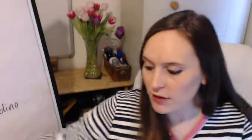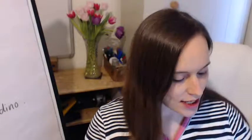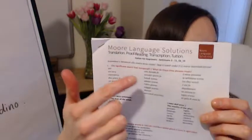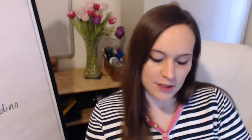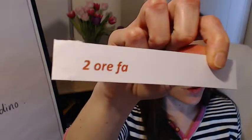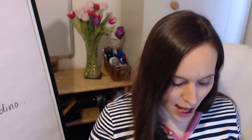Che cosa abbiamo studiato? At the beginning of the lesson we started off looking at some time-related expressions — temporal phrases. We've got a list here with three columns. I got you to try and put these time expressions into chronological order. Let me show you some of them. Due ore fa — that means 'two hours ago'. Due ore fa.